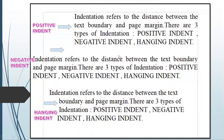This is the diagrammatic view of indentation showing all three types. In positive indent, text is inward from the margin. In negative indent, text is outward from the margin. In hanging indent, the first line is normal and the next lines are further indented.